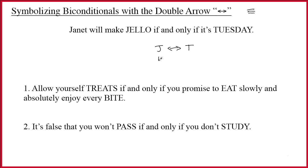Of course, the double arrow is commutative, so it would be perfectly okay to put t double arrow j. The truth is, symbolization of double arrows could hardly be easier. If you know the synonym, you just put a double arrow exactly where it goes, and you don't even have to worry about which side you put the sentences on.